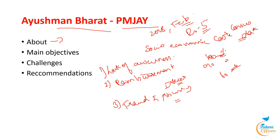The recommendations under the scheme: first is the provision of an Ayushman card. Every potential beneficiary should be given an Ayushman card as part of the program, which can function as a prepaid card worth rupees 5 lakh and be used to receive free medical care at any empaneled hospital. This would make beneficiary identification and verification less complicated and time-consuming.